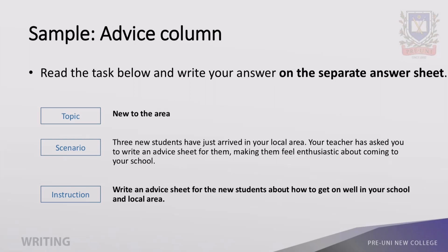In a sample advice column question, the question is brief but can be split into three parts: topic, scenario, and instruction. The scenario indicates that three students have arrived in the local area and the aim is to welcome them and make them feel enthusiastic about coming to school. The instruction indicates that the structure should be that of an advice sheet which will provide information to new students so they get to know more about the school and the local area.